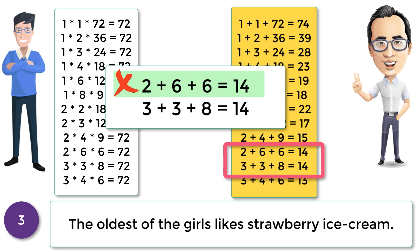So the ages must be 3, 3, and 8, and that's the solution. The ages of the three daughters are 3, 3, and 8. This is how you have to approach this kind of problem.